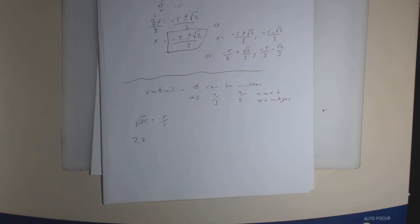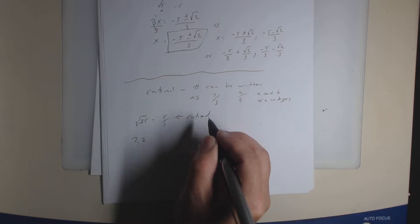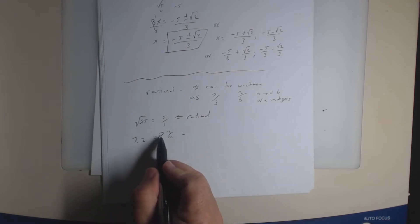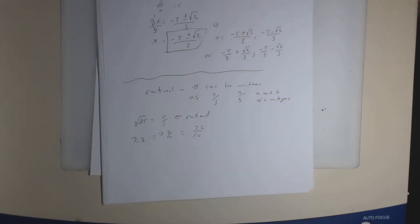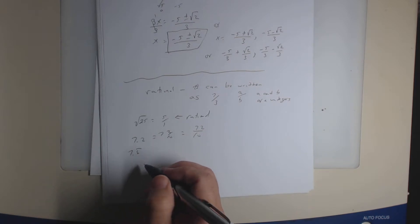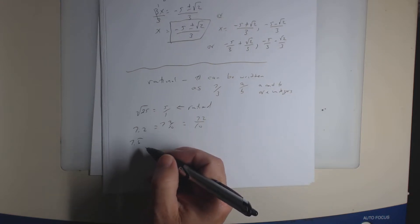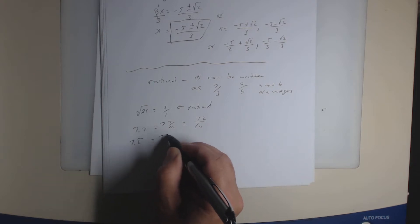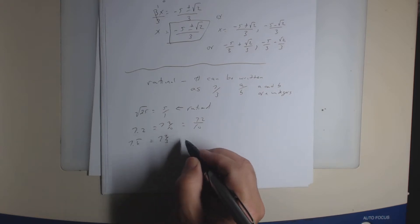What about 7.2 — rational or irrational? That's rational. The reason is because 7.2 is mathematically 7 and 2 tenths. This mixed number can be written as an improper fraction: 10 times 7 is 70, plus 2 is 72, written as 72 over 10. So any decimal that terminates, or a decimal that repeats — like 7.6 repeating — is rational. What is 0.6 repeating as a fraction? That's 2 thirds. So a decimal that repeats is also a rational number.